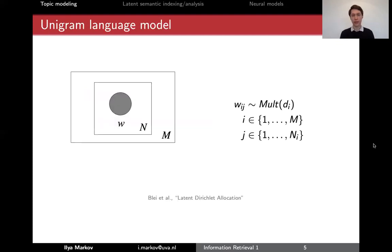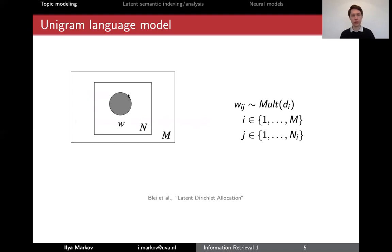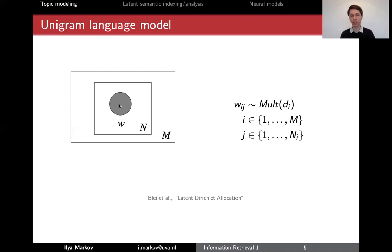Let's talk about unigram language models again — we covered them in a previous video. Now note that there is no document here, just words. You may have seen this so-called plate notation before. With circles we denote random variables — here this is a word, or more precisely the occurrence of a word. The shaded circle means we observe this, and the empty circle means we don't observe it.